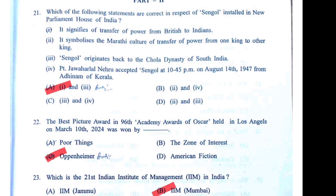The Best Picture award at the 96th Academy Awards (Oscars) — not American Fiction, not Poor Things — Oppenheimer. Oppenheimer was directed by Christopher Nolan, one of the most famous directors. The lead actor, Cillian Murphy, also got the Best Actor award for Oppenheimer.